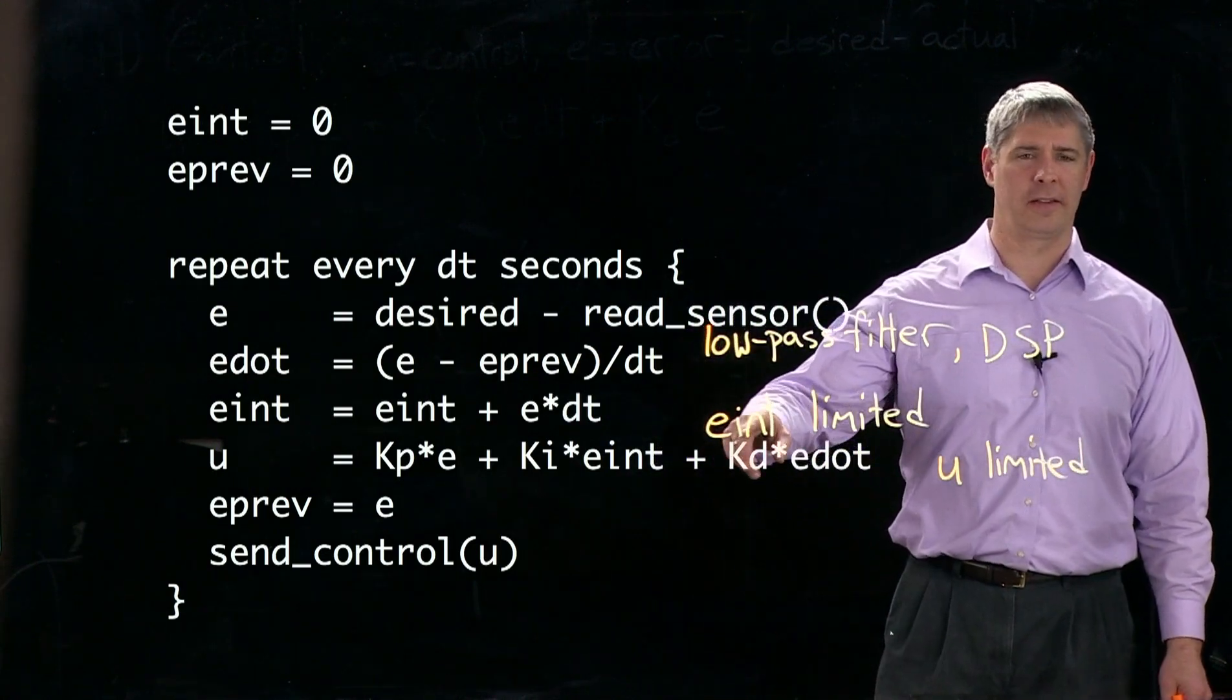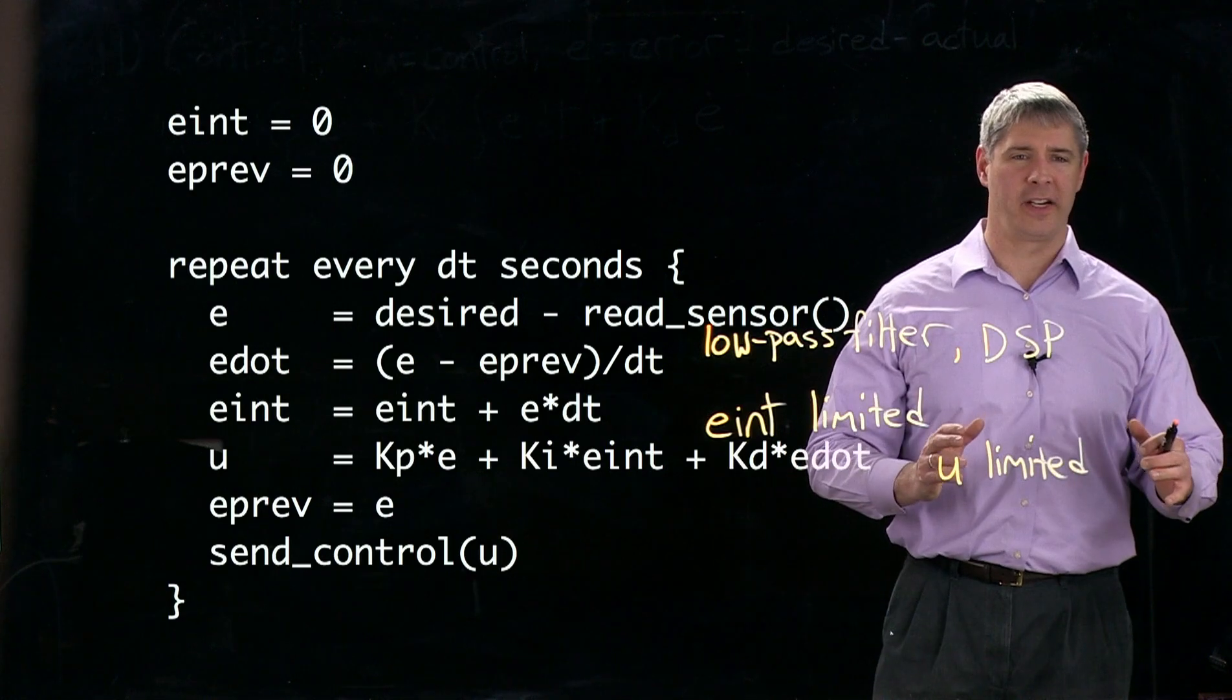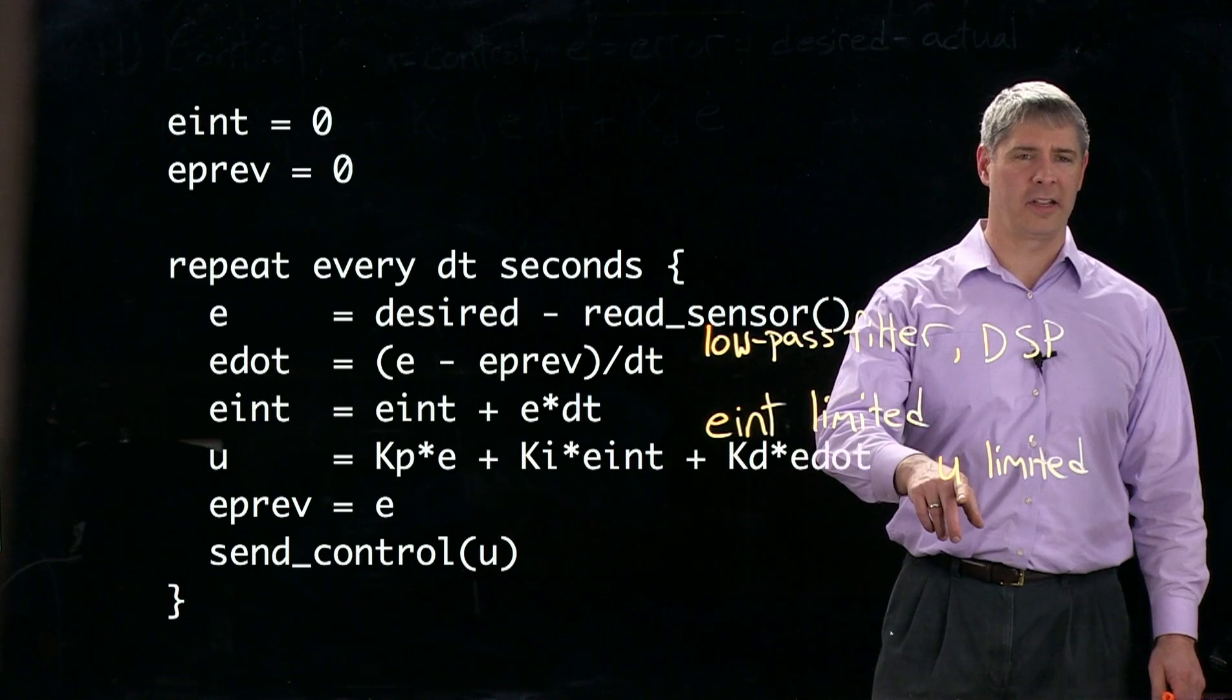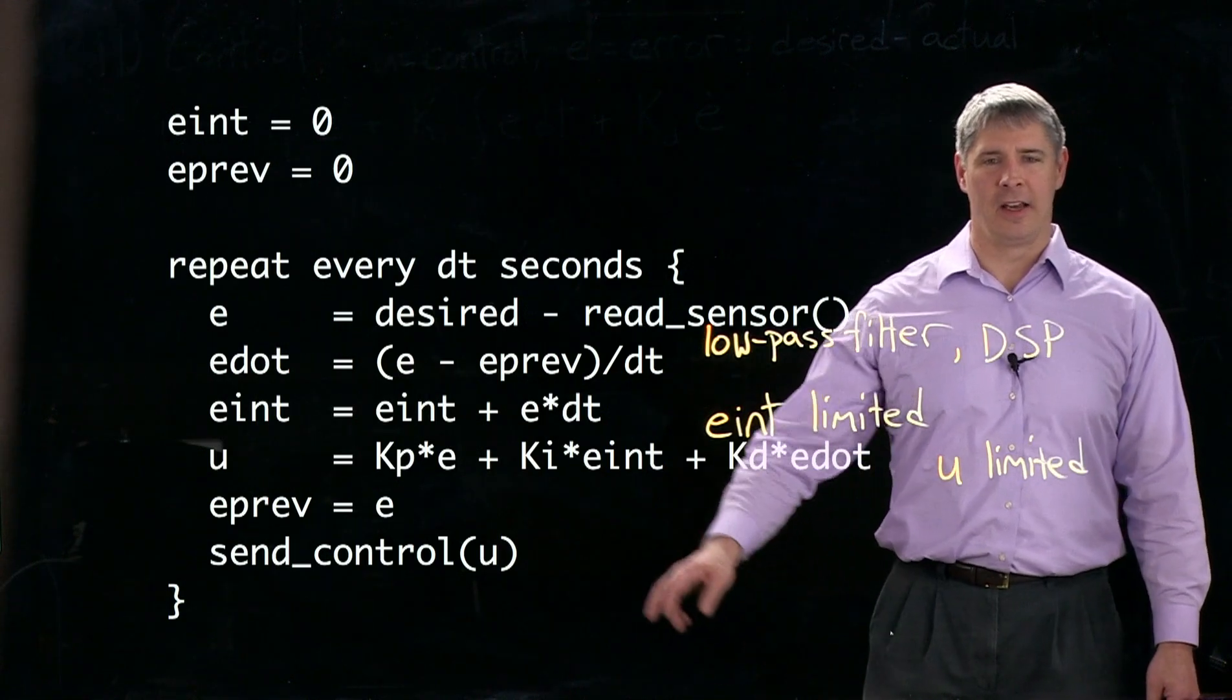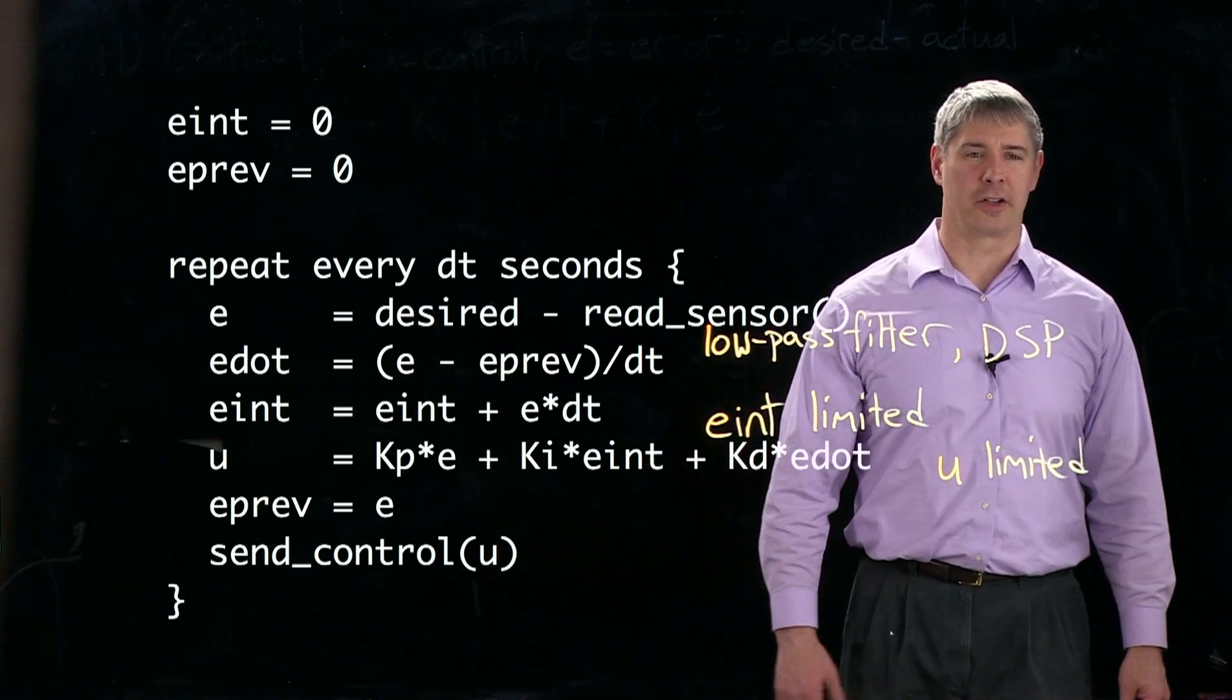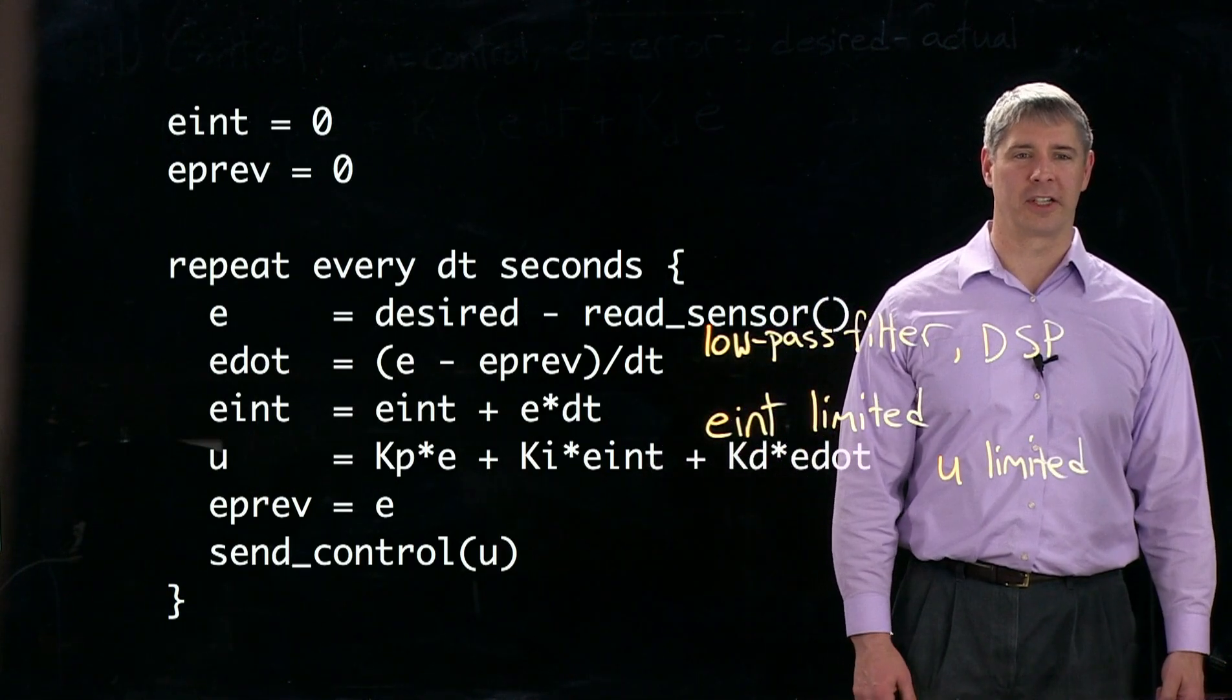So we take these two values, take the value of eint, saturate it at some maximum values, calculate u, and if that exceeds the maximum values, then we have to saturate that before we send it to the controller or to whatever is implementing the control signal.